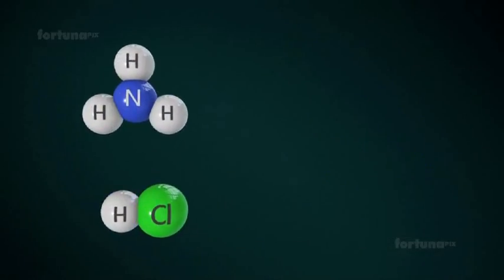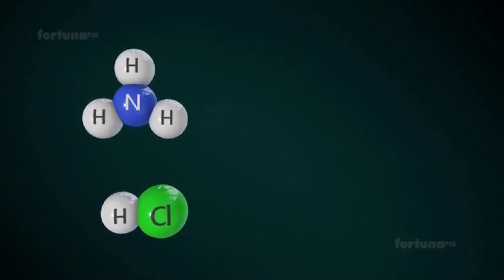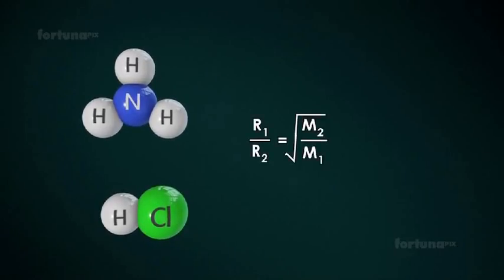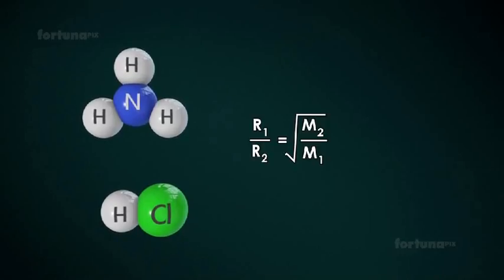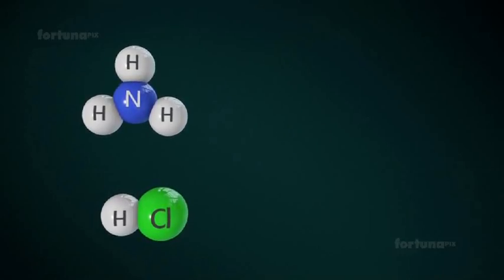For a mixture of two gases, this equation is given as R1 divided by R2 equals square root of M2 divided by M1.